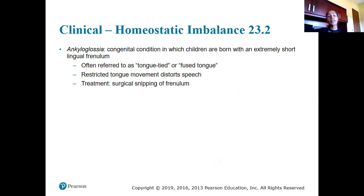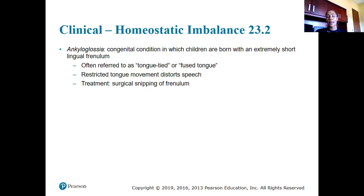Let's talk about a homeostatic imbalance: ankyloglossia, a congenital condition in which children are born with an extremely short lingual frenulum, often referred to as tongue-tied or fused tongue. We typically take these children to an oral surgeon who will snip the lingual frenulum just enough to give the child more mobility of their tongue so they can eat more freely and speak more clearly.